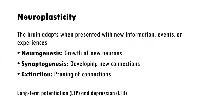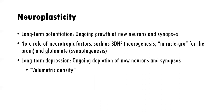Let's talk more formally about neuroplasticity. The brain adapts when presented with new information, events, or experiences. Neurogenesis is the process of growing neurons. Synaptogenesis is the process of developing new synaptic connections, and extinction is the pruning of connections. Over time, if too much pruning and death of neurons occurs, you have long-term depression. If you have the ongoing growth of neurons and synaptic connections, you have long-term potentiation — and you can guess which one is more functional. There are neurotrophic growth factors such as brain-derived neurotrophic factor (BDNF) and glutamate that help with the growth of new neurons and synapses.